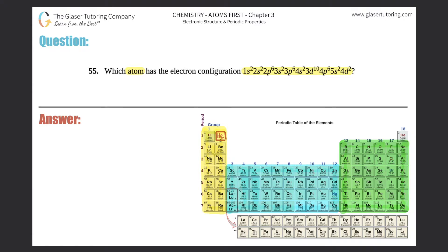So the first thing I see here is that we're talking about an atom and not an ion. If they said ion, that means there had to have been a charge, but an atom has no charge. So we just have to follow the atomic number to get to what this element is.